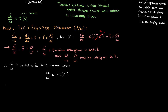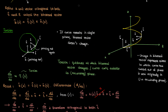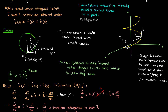The last portion of this video defines two other planes. The first is the normal plane. Remember how the osculating plane was formed by the unit tangent vector and the unit normal vector? The normal plane is a unique plane formed by the unit normal vector and the unit binormal vector. The other plane, the rectifying plane, is a unique plane formed by the tangent vector and the binormal vector.